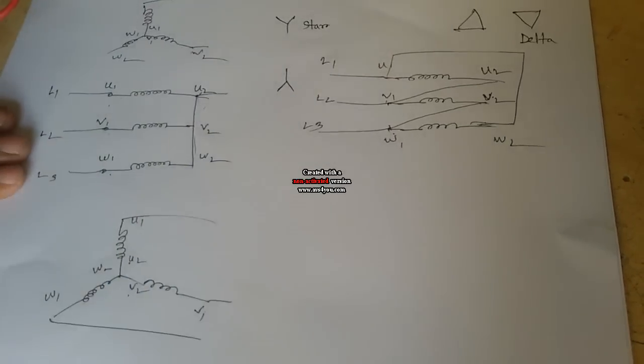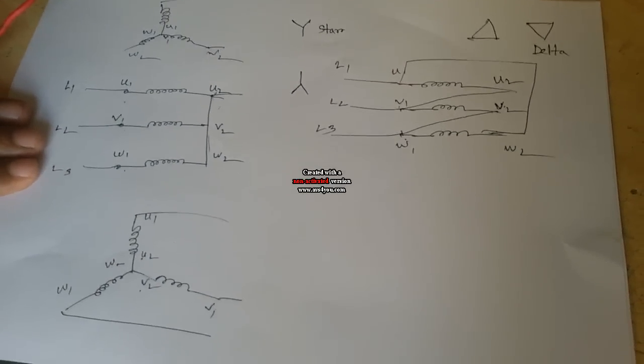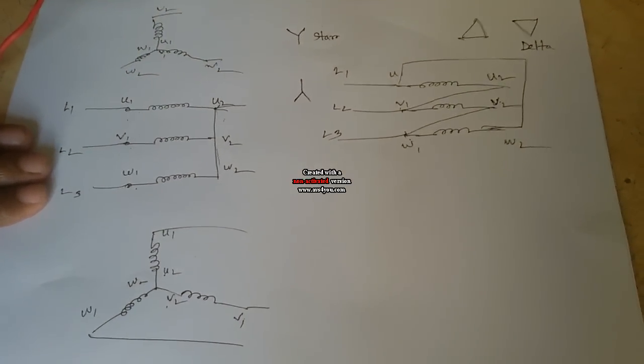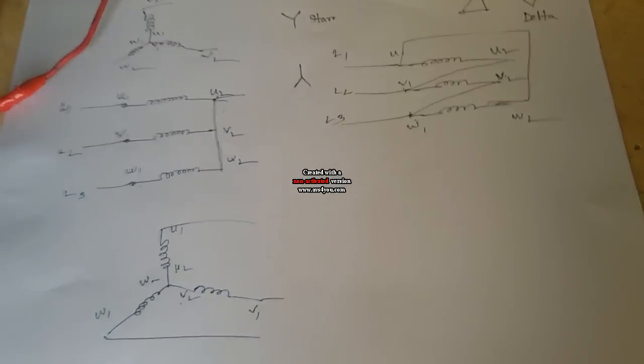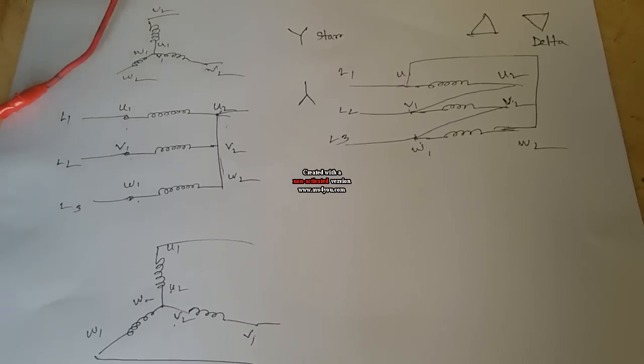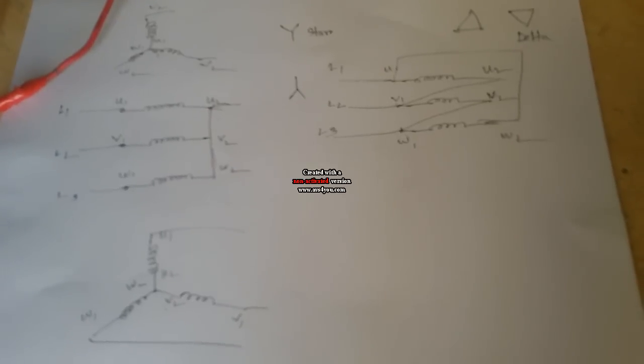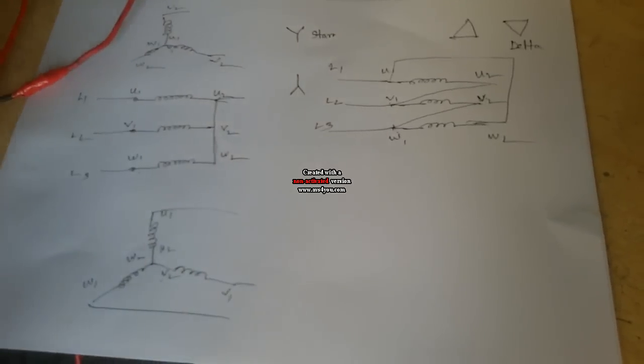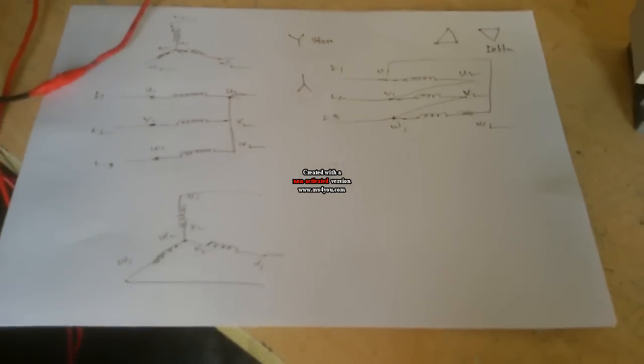Star-delta means: first start in star, then stop star, then convert to delta, and continue in delta. Star-delta means not together - they do not run at the same time. This motor first starts in star, then stops star, then converts to delta very quickly. When switching from star to delta: star stops, then quickly start delta. The transition from star to delta must happen quickly.